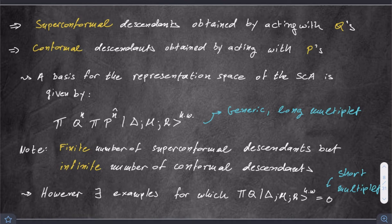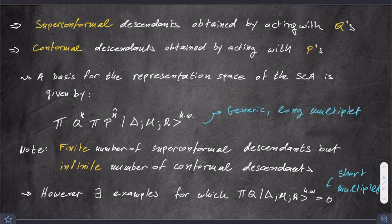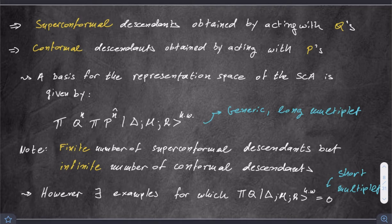However, there exist interesting examples for which, in addition to the S's annihilating the superconformal primary, a combination of Q's also annihilates the superconformal primary state. As a result, the superconformal multiplets you build by the action of Q's have fewer states than your generic long multiplets. We refer to these as short multiplets. These are going to be the stars of the show — the kinds of multiplets that the superconformal index ends up receiving contributions from.